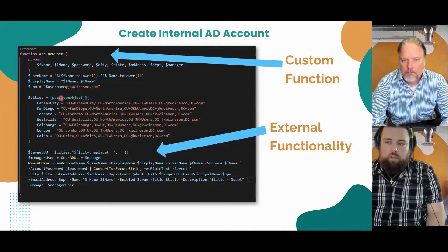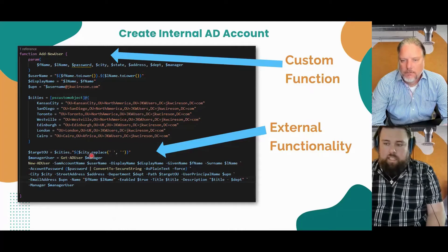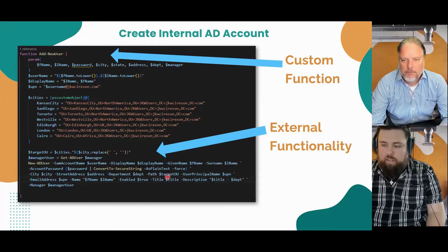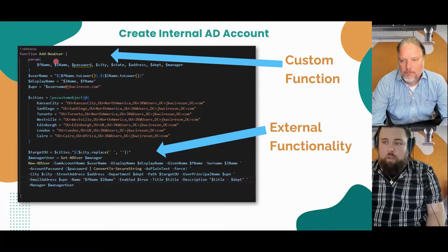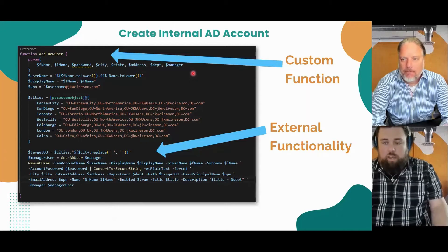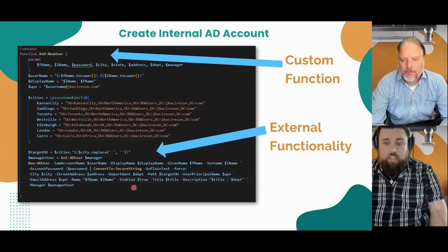This PSCustomObject in the middle is a lookup. I'm getting the city passed in as a parameter to my custom function, and I need to look up the OU where to create the user based on their city. I pass the city in, pull out the spaces, and access the actual city name — which returns the OU. That's what I pass to my path so when the user gets created, it goes to the correct path based on their city. All the other details just flow in through the parameters in this custom function. Then we run new-aduser and it creates the user in AD.